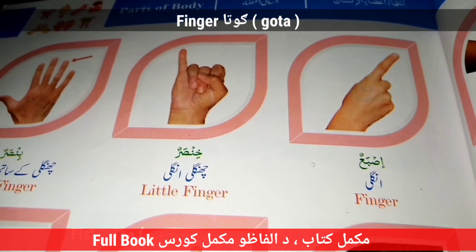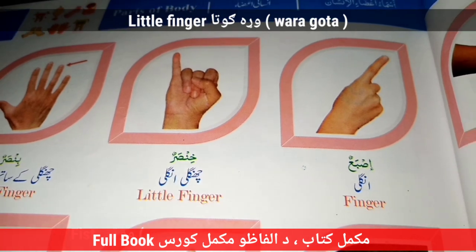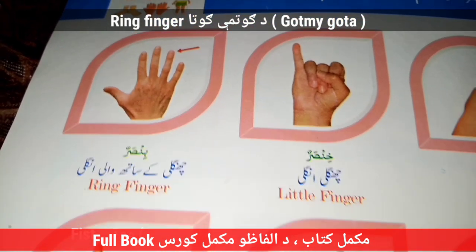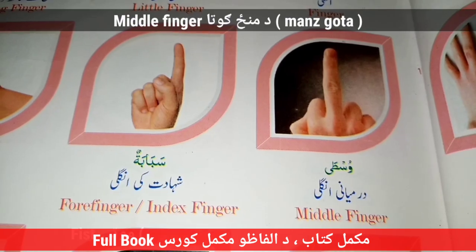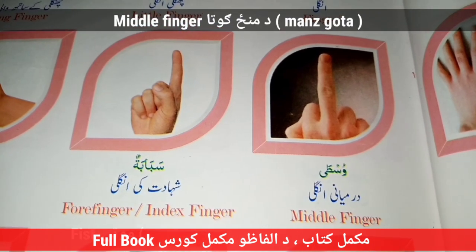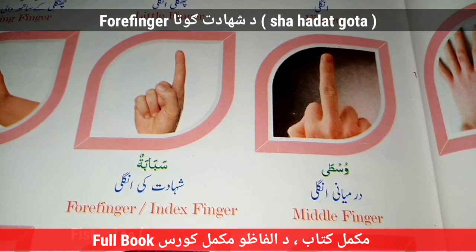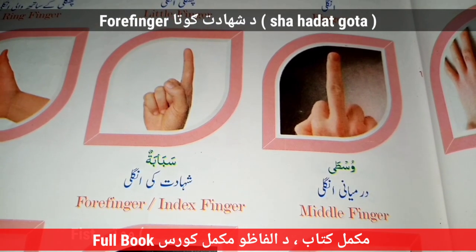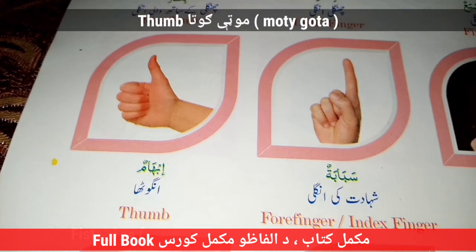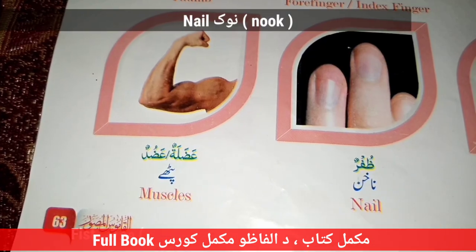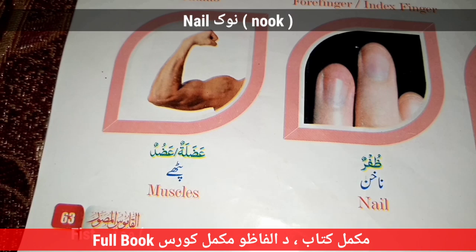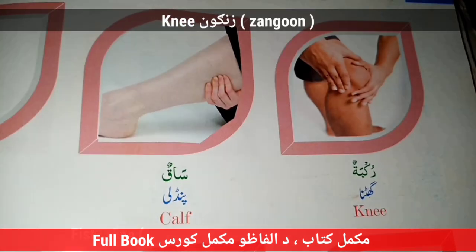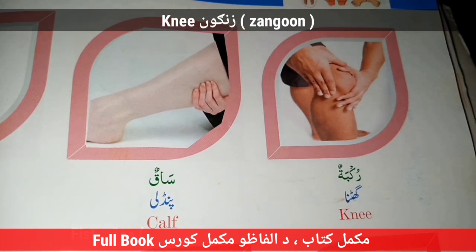Finger — Gota. Little Finger — Wala Gota. Ring Finger — Dugutmi Gota. Middle Finger — Mianzine Gota. Forefinger — Index Finger — Dha Shahadet Gota. Thumb — Muti Gota. Nail — Nukan — Ya Nuk. Muscle — Pate. Knee — Zangun — Kaaf — Panday.